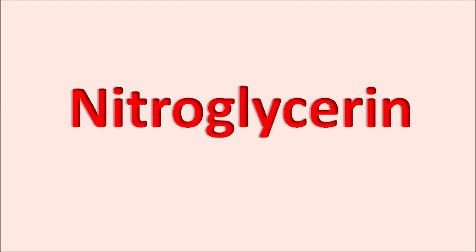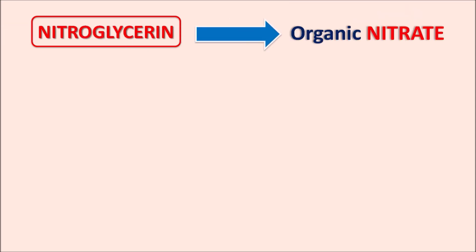Hi everyone. Today in this video we are going to discuss about nitroglycerin. What is this drug nitroglycerin? The prefix nitro indicates this drug is having the nitro groups, and chemically this drug belongs to organic nitrates, commonly called as nitrates, and they are organic in nature. This nitroglycerin is made up of a glycerin structure with three nitro groups, so it is also called as glyceryl trinitrate, commonly denoted as GTN.